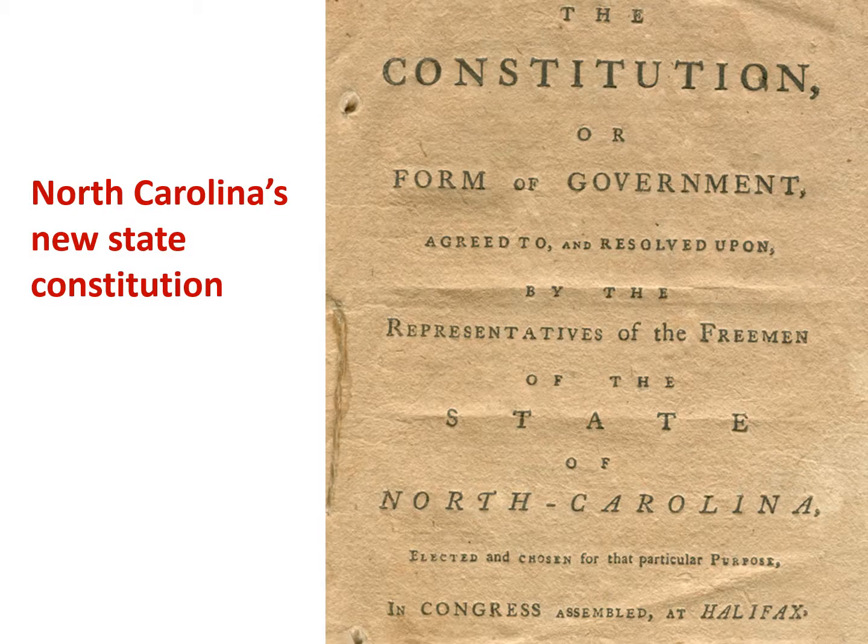As this drama unfolded in Philadelphia, the states went about drafting their own state constitutions. Every state decided to draft a written state constitution, and the idea of a written constitution was relatively new. The British referred to their constitution as a set of traditions and values — it really wasn't written down. The Americans thought that the unwritten nature of the British Constitution made it easier for that British government to abuse them.